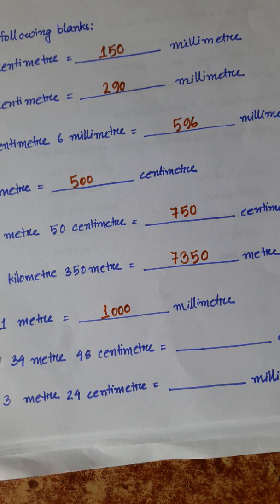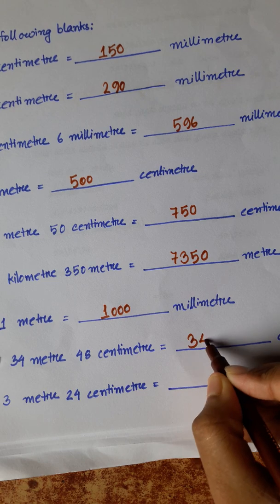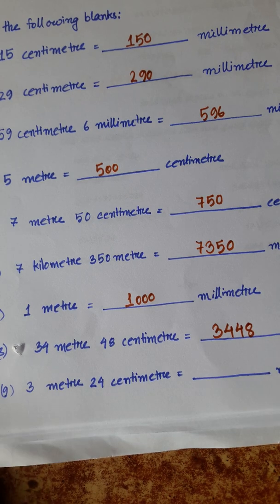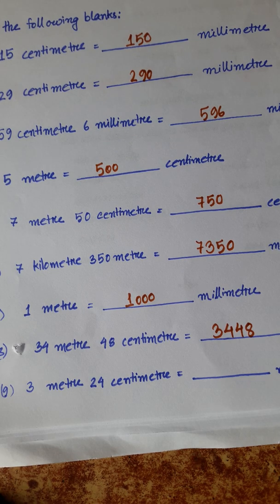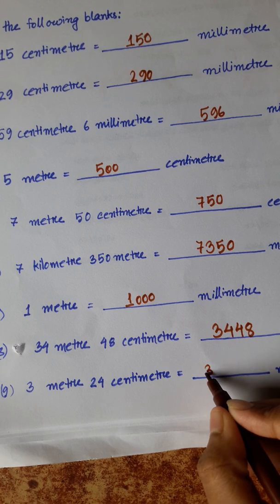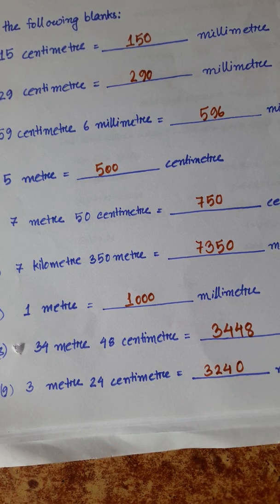Therefore it will be 3448 centimeters. Number 9: 3 meters 24 centimeters is equal to how many millimeters? 1 meter is equal to 1000 millimeters. 24 centimeters is equal to 240 millimeters. So it will be 3240 millimeters.